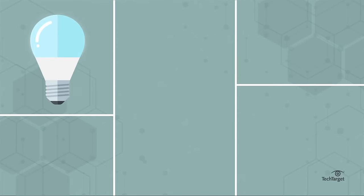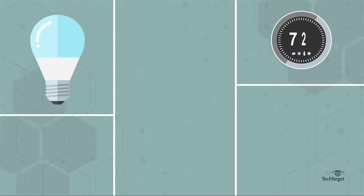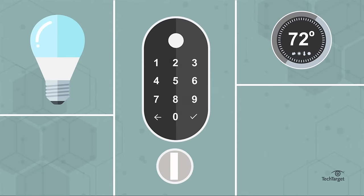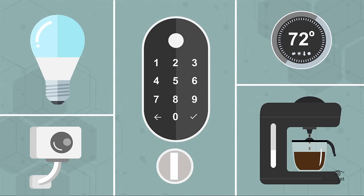Smart homeowners can control lighting systems remotely, schedule and monitor thermostats, grant or deny home access through smart locks, check in on security cameras, and even brew coffee remotely.